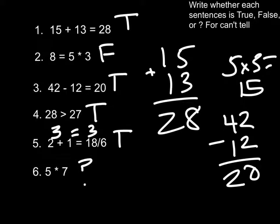5 times 7, you cannot tell. There is not an equal sign, a greater than, or a less than sign. So we do not have enough information to figure that one out.